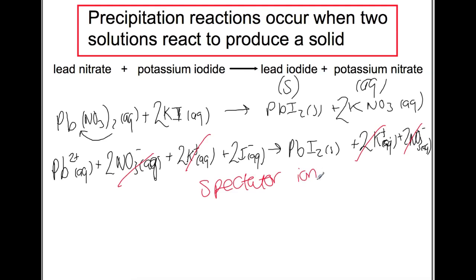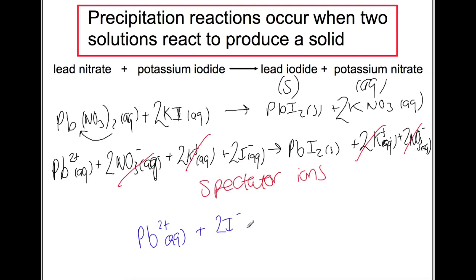Spectator ions do not do anything in the reaction — they just watch it happen. We then rewrite the reaction without the spectator ions: 2Pb²+ aqueous plus 2I⁻ aqueous to give PbI₂ solid.